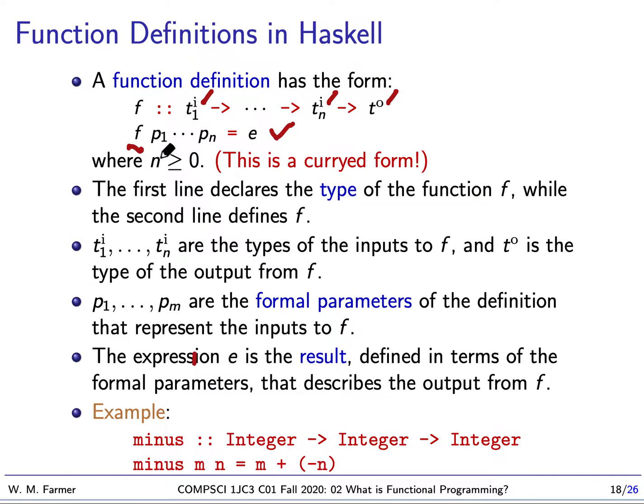If we look at how the function is defined, we have the function name, and then we have N what are called formal parameters - names for the inputs. Those formal parameters usually will occur in E. E could be a very complicated expression, but it's how we define what the function does when given those formal parameters.